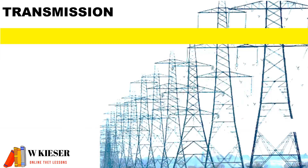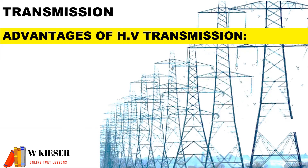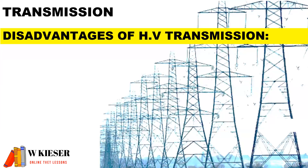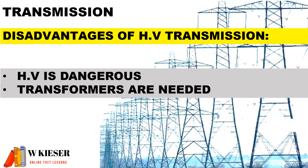For the transmission section, we look at the advantages of high voltage transmission. By using high voltage, we require thinner cables, less current is drawn, and less pylons are used, which means we save on costs. However, the disadvantages of high voltage transmission are that high voltage is dangerous and additional transformers are needed.